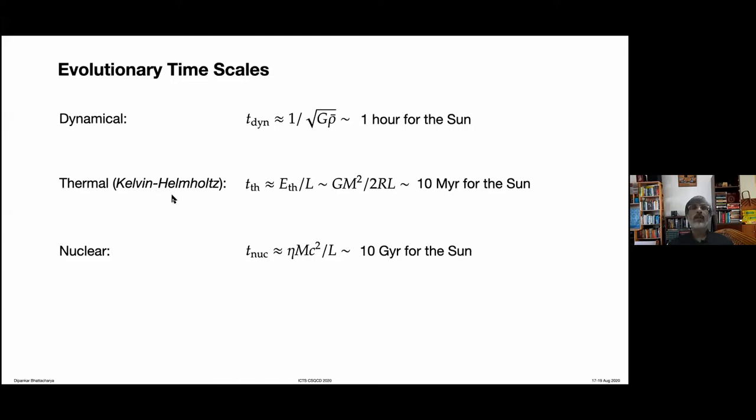But 10 million years is still very small compared to the time for which we have known the Sun to exist. How long have we known the Sun to exist? That comes from fossil records, isotope records in the Earth, dating of the Earth itself, and so on — that goes into billions of years. So clearly, without nuclear energy generation, you would not have the Sun living for as long as it actually has.